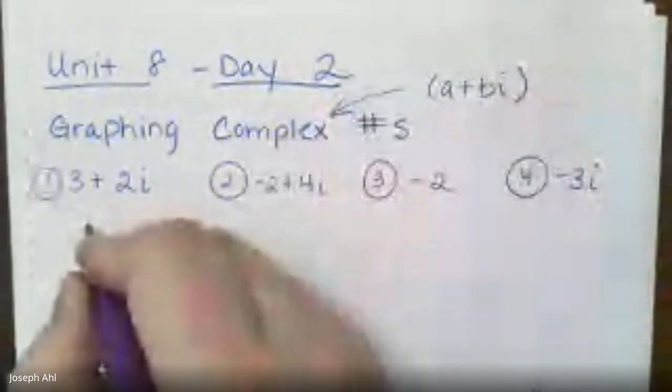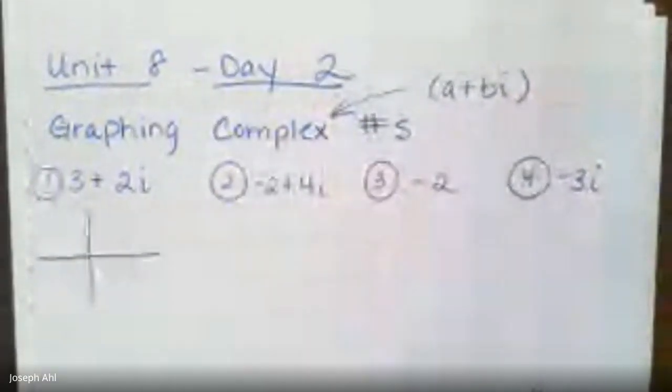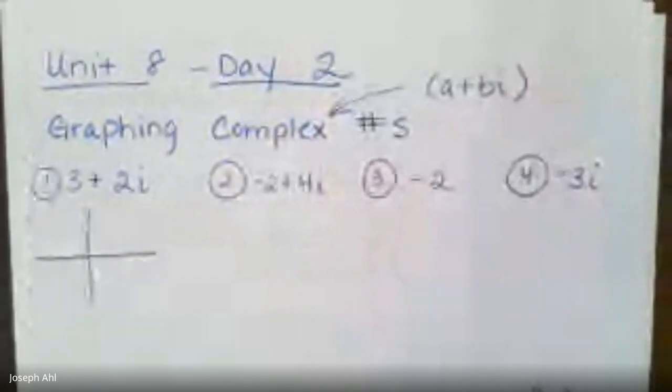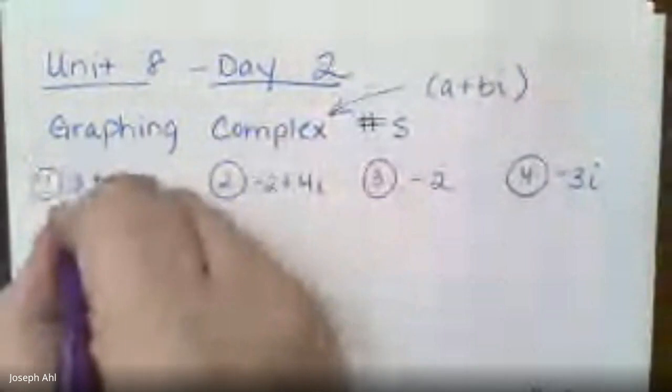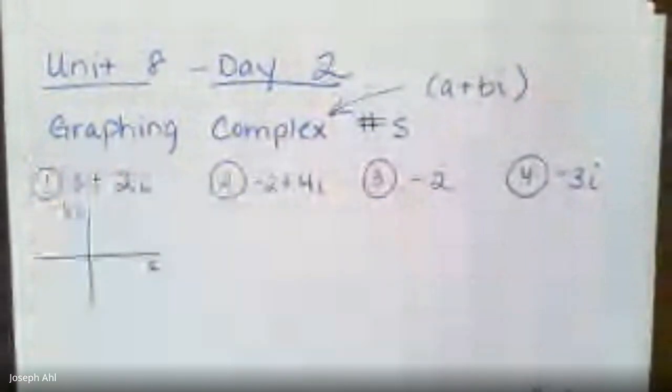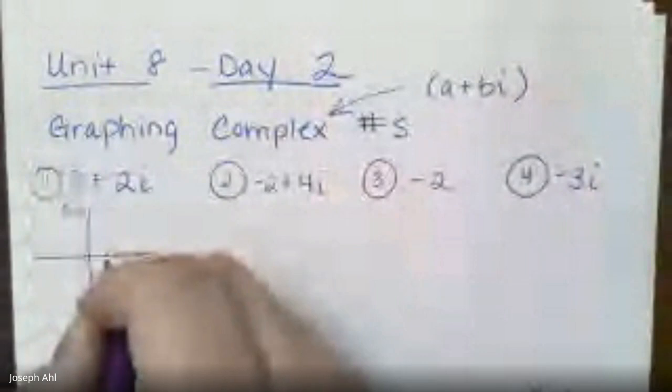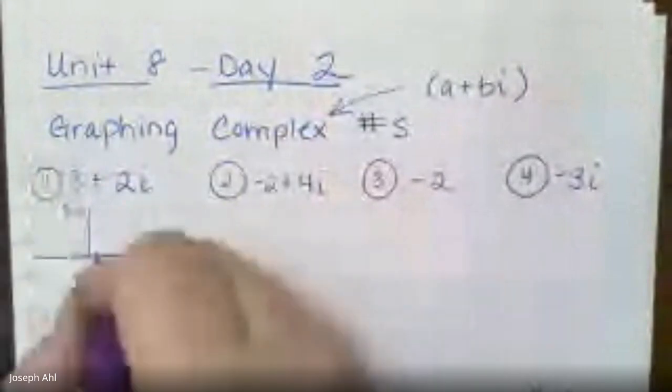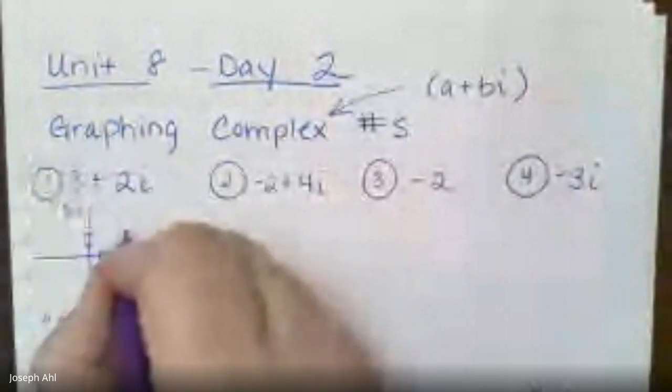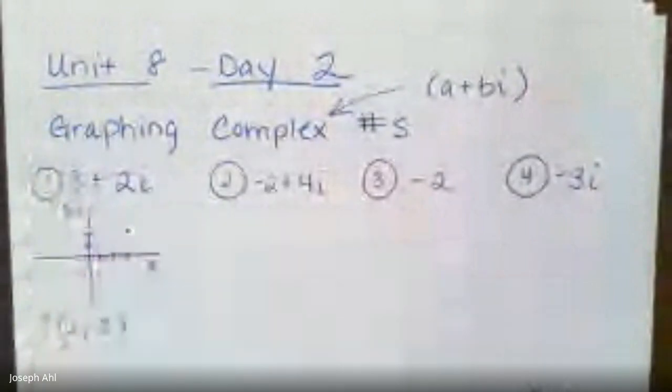So when something's in A plus BI form, when I go to graph the number 3 plus 2i, it's going to have a similar feel to graphing things in the XY plane. Usually we label this horizontal as the X axis and this is the Y axis. We now label them as the A axis and then the BI axis. So if the imaginary axis is vertical, the real number line is horizontal. To graph 3 plus 2i, it's going to have a similar feel to the point 3, 2. So if I were to graph that in the XY plane, we would go to the right 3, and then we'd go up 2.